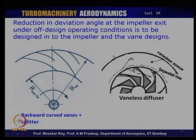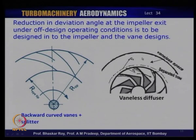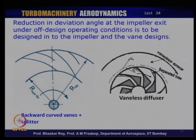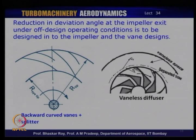So the choice of the diffusion process after the impeller is: you can have an entirely vaneless space — which gives you a broader mass flow range but somewhat lower efficiency. A lot of research is going on so that a vaneless centrifugal compressor can have a reasonably competitive efficiency, and research is quite active in this area.